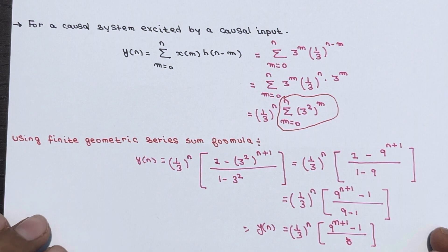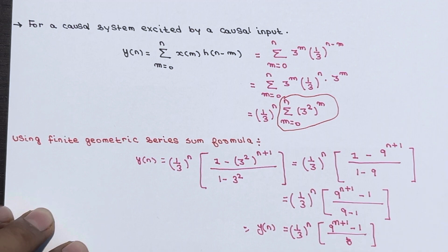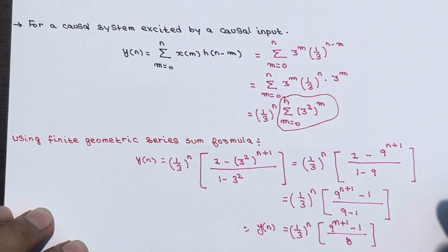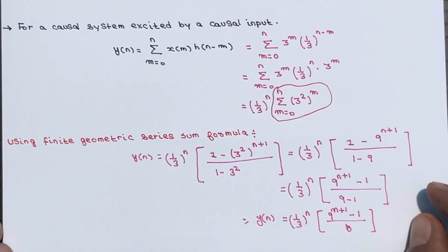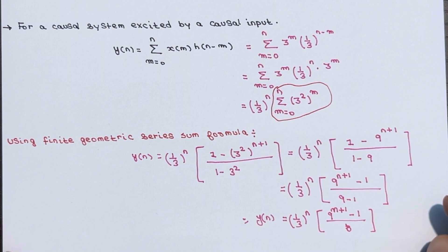We have determined the response of the system characterized by impulse response h(n) = (1/3)^n · u(n) to input signal x(n) = 3^n · u(n). If you have any doubt, you can ask in the comment section and please don't forget to subscribe to our YouTube channel. Thanks for watching.